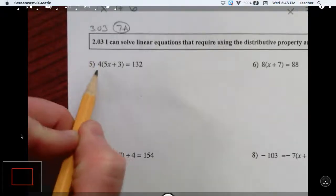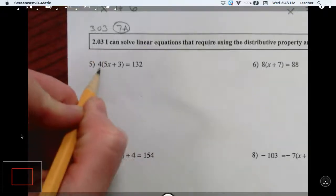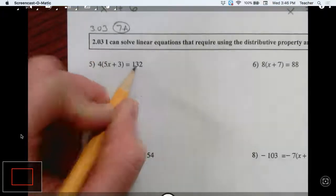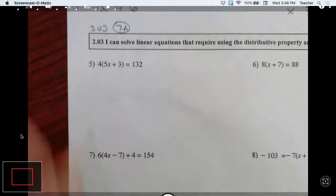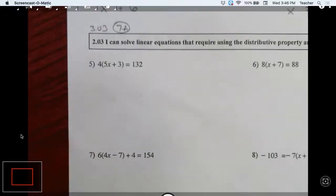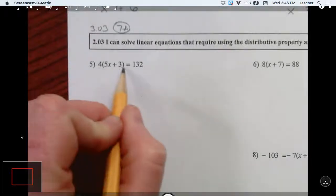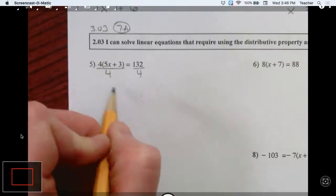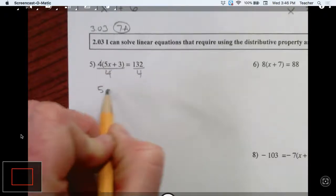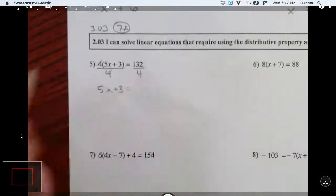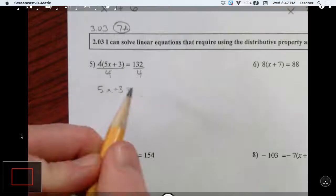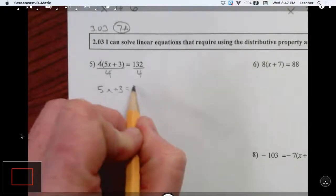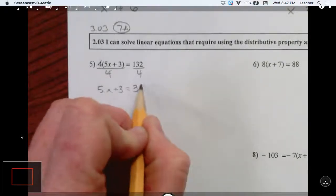So what this problem is saying is 4 times some number is 132. Okay, so before I even start I could divide this by 4, right?